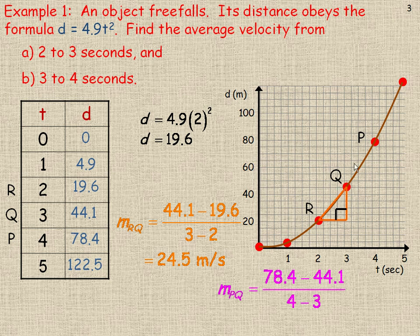Now between points Q and P, between times 3 and 4, we would subtract 78.4 and 44.1 in the numerator, and 4 and 3 in the denominator. That gives us an average rate of change of 34.3 meters per second between points Q and P. Notice that this line segment is a little bit steeper than that one, and that's because the object is accelerating.